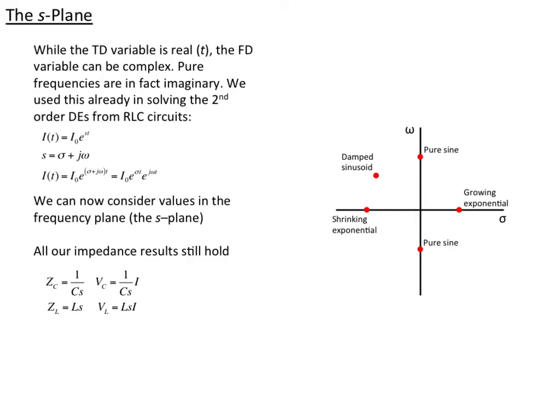However, and we use that already when we solve the second order differential equations, I can also have a real part of that, which indicates either a growing or a shrinking exponential. I can imagine that my current is a function of e^(st) now, and s has a real part σ and an imaginary part ω. When I plug this in, I can break up s into two parts. Because I'm adding in the exponential, I'm multiplying exponentials. I can break that into here's my exponential decay or rise and my purely sinusoidal part.